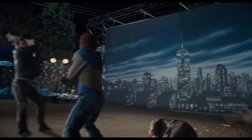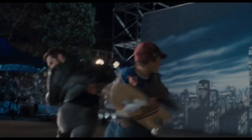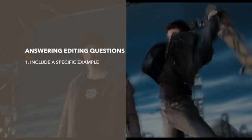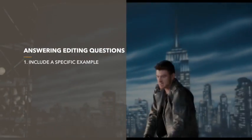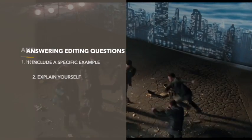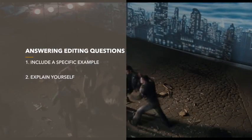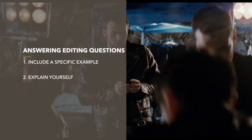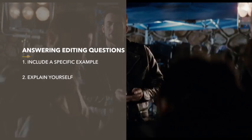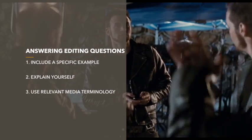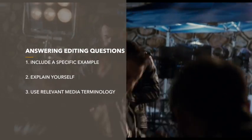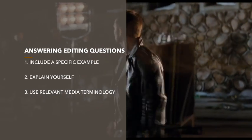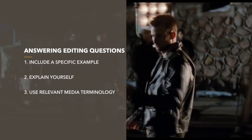When discussing editing for a narrative question, there are a number of things you need to remember. Firstly, you need to include a specific example — don't be vague. Secondly, you need to explain yourself — don't just acknowledge that editing is there, explain why. Thirdly, and most importantly, use appropriate and specific media terminology relevant to editing.